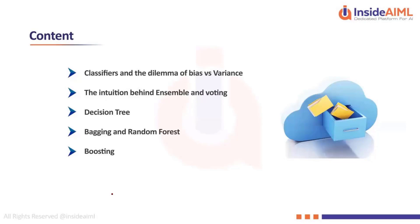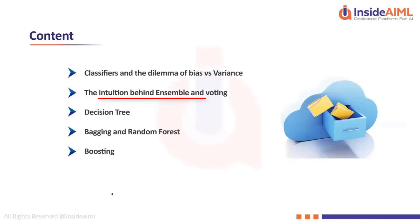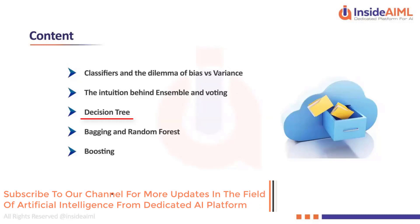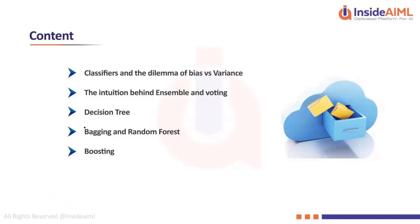Ensemble learning has at its base the concept of classifiers. We'll start with a gentle introduction to classifiers, some design issues and challenges, and what led us to ensembling. Then we'll understand why it works — the intuition behind it — and see that one of the most basic ensembling schemes is voting. We'll look at decision trees as a classifier, then cover bagging, random forest, and end with boosting.